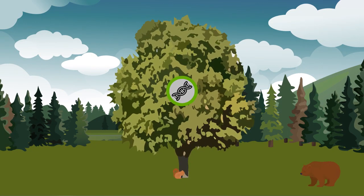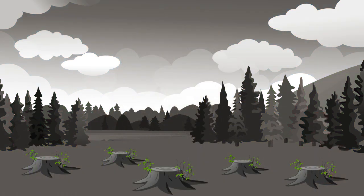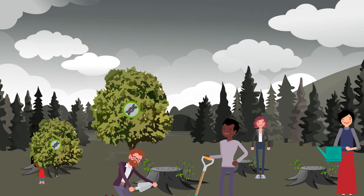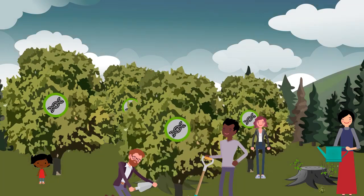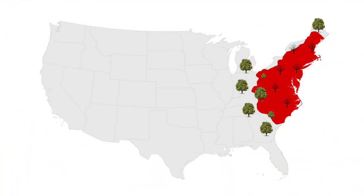Our blight-tolerant American chestnut trees can potentially be used to rescue the remnant population of American chestnuts currently surviving mainly as stump sprouts. Pending federal approval, the blight-tolerant trees can be outcrossed to these surviving mother trees. Continued outcrossing could produce a diverse and blight-tolerant population fully adapted to our forests.